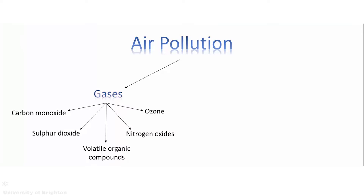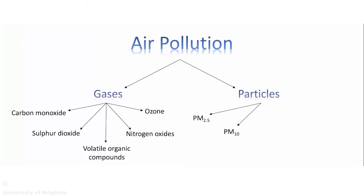Unlike the gaseous pollutants, owing to its complexity, at a top level particulate matter — often simply referred to as PM — is most often characterised by its size rather than its chemical composition. For instance, under the general particulate pollution category we have PM2.5, which is particulate matter with a diameter of 2.5 micrometres or less, and we have total suspended particles, essentially a sum of all particulate matter regardless of size. When we do categorise by composition, typical subcategories include organic particles.